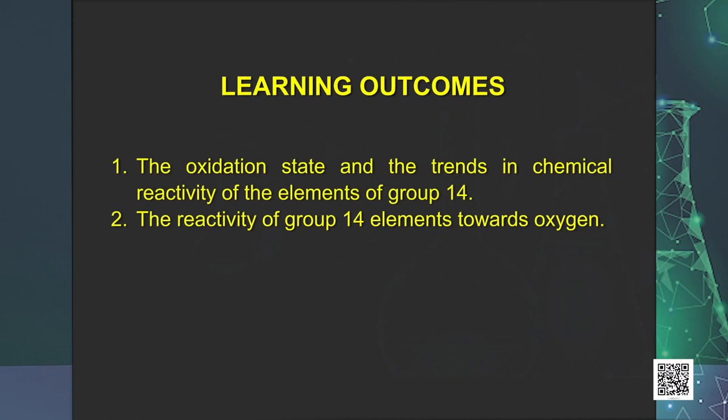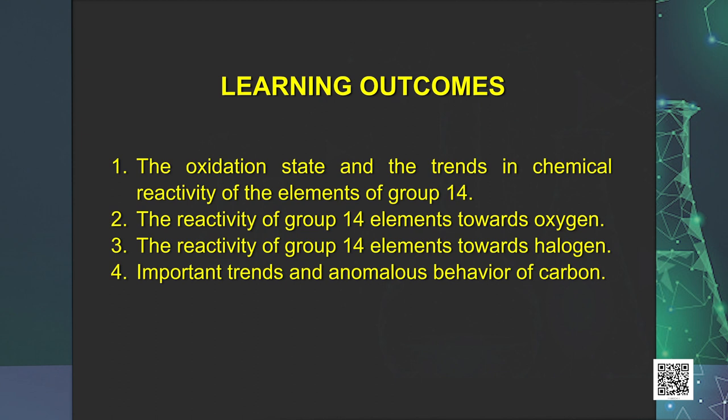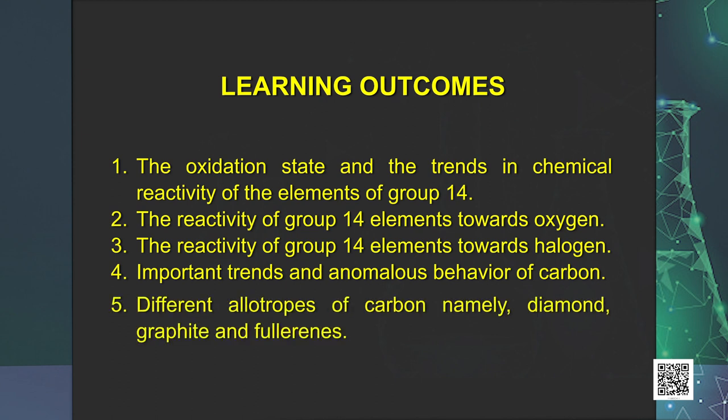After this discussion you will be able to explain the oxidation state and the trends in chemical reactivity of the elements of group 14, the reactivity of group 14 elements towards oxygen, the reactivity of group 14 elements towards halogen, important trends and anomalous behavior of carbon, and different allotropes of carbon namely diamond, graphite and fullerenes. Let us start this session with a discussion about the oxidation state and the trends in chemical reactivity for the group 14 elements, that is the carbon family.